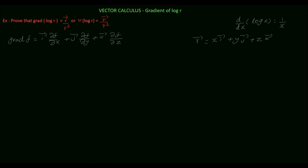In this tutorial, we will prove that the gradient of log r equals r vector divided by r squared. Here, r vector is the position vector at any point, equal to xi vector plus yj vector plus zk vector. Now we will find the gradient of log r.